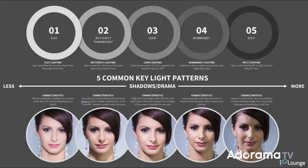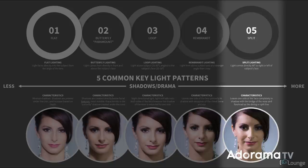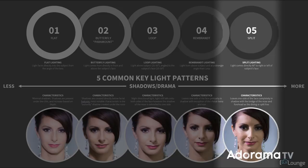Let's dive into this slide from Lighting 1. As you look at the diagram, on the left side we have less shadows, and as we push to the right side we're going to introduce more shadows. Shadows equals drama. So as we want more dramatic and edgy portraits, we push towards lighting patterns on the right side, and as we want more soft and flattering images, we move towards the left.